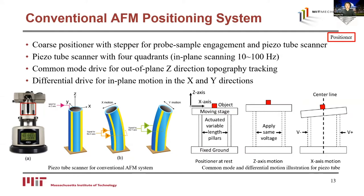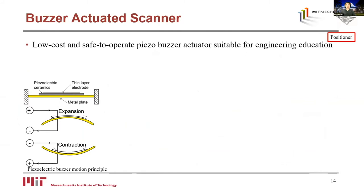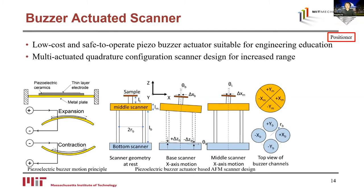The buzzer-actuator scanner is designed with low-cost and safe-to-operate characteristics. Piezo buzzers have a three-layer structure: an electrode, a layer of piezo ceramic material, and a metal plate. The motion created by contraction and expansion of the piezo material is amplified by the metal plate. They are mostly used in speaker applications requiring relatively low voltage and current. Similar to the piezo tube scanner principle, we can cut the electrode layer of a larger piezo into four quadrants or use four smaller buzzers. Combining two configurations provides a more flexible range-resolution trade-off — achieving a 16-micron scan range at 75 Hz even with a 3D-printed structure. The cost of each buzzer is around $1, making them ideal for engineering education.